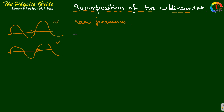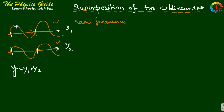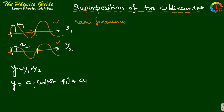When two simple oscillations superpose on each other — that is, when two simple oscillations are along the same direction, say the y direction, and have the same frequency — then using the principle of superposition, the total displacement is y = y1 + y2. Let the amplitudes be a1 and a2, so y1 = a1 cos(ωt − φ1) and y2 = a2 cos(ωt − φ2).